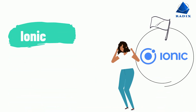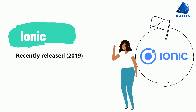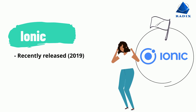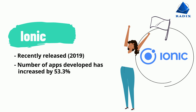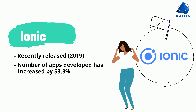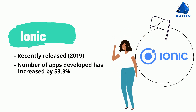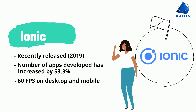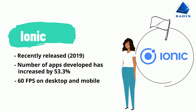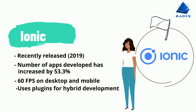And now for Ionic. Ionic is a preferred cross-platform framework that rose to fame in 2019. Since then, the number of apps developed using the Ionic framework has also increased by 53.3%. Comparing Ionic vs Flutter in performance, Ionic provides 60fps on desktop and mobile. Using pre-existing plugins offers a hybrid approach that can speed up development.